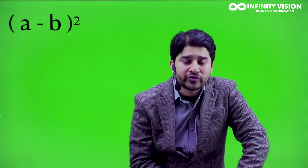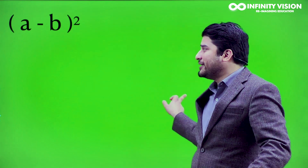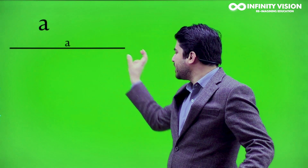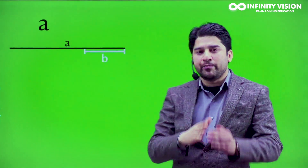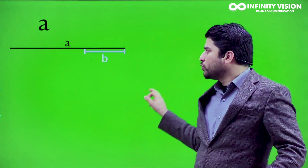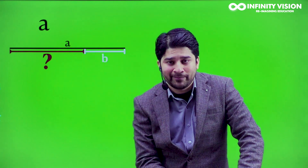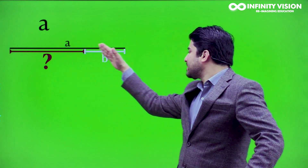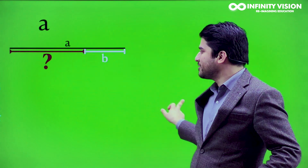I want you to visualize a line segment of length a, something like this. Now I want you to visualize a projection of small length, let's say b, over a, something like this. This black length is a and this white length is b. Now I want you to find the length of the remaining portion, which is being represented by the red line segment. Since the complete line segment is a and this portion is b, definitely the red length represents a minus b.